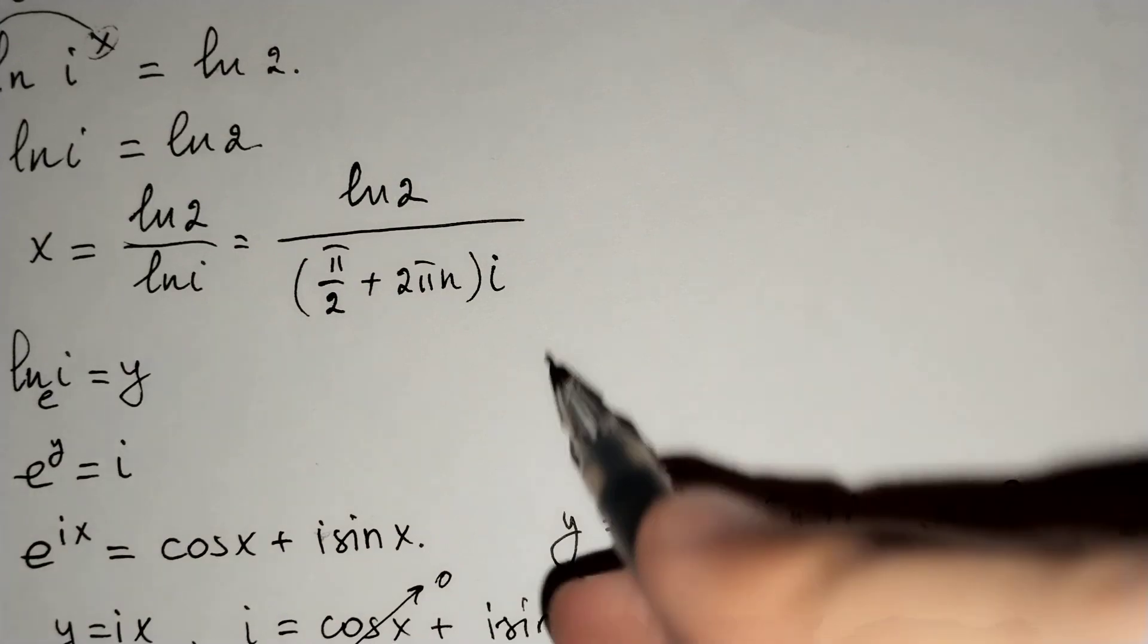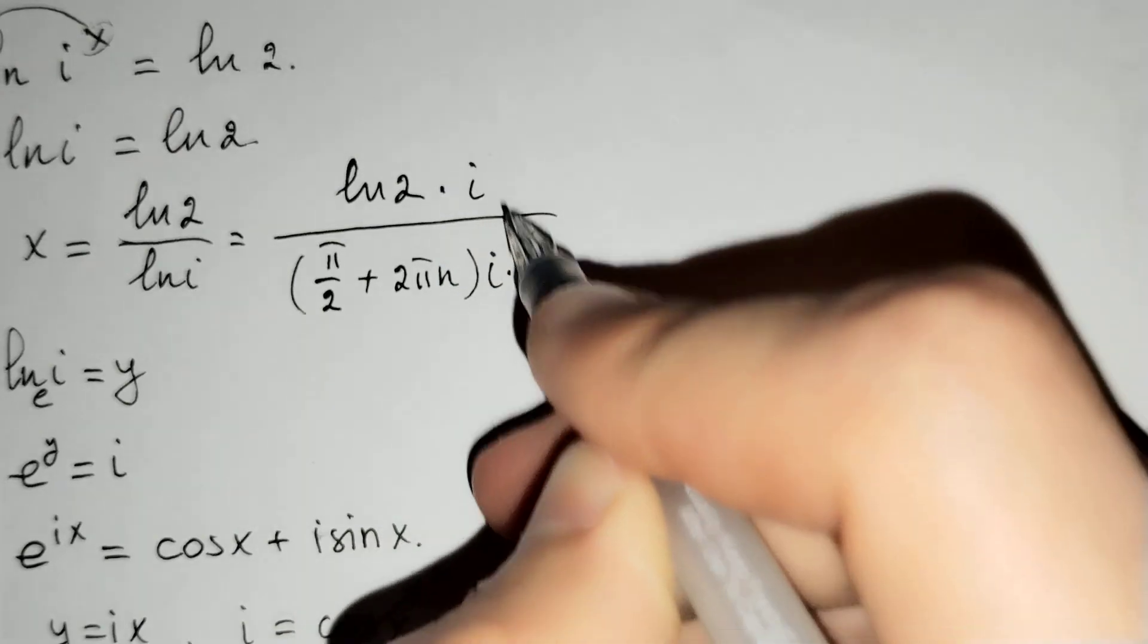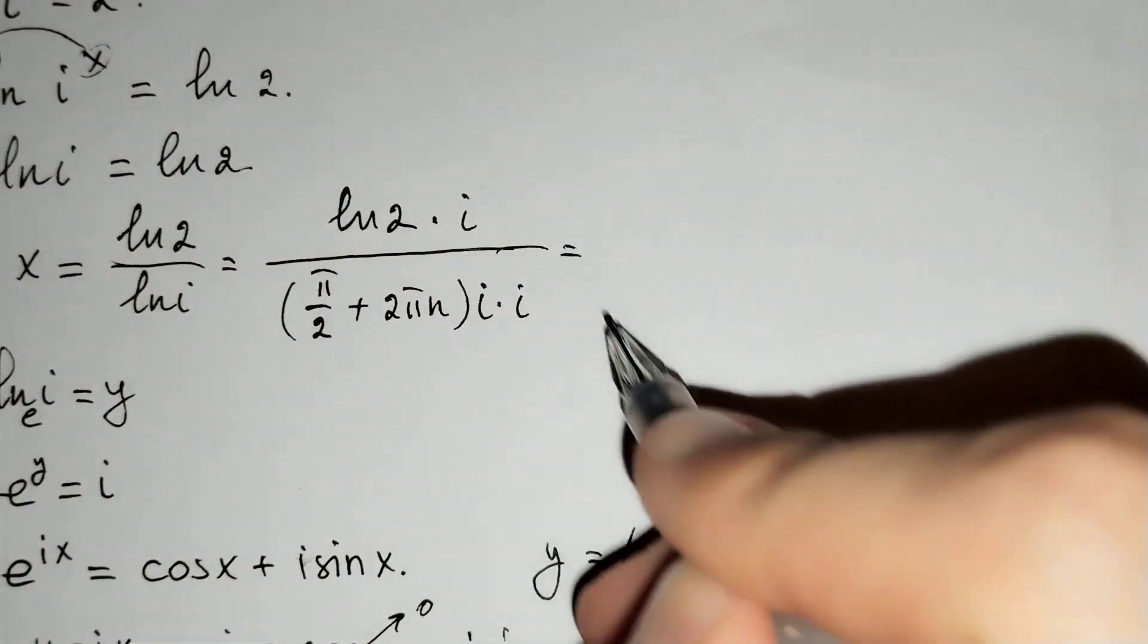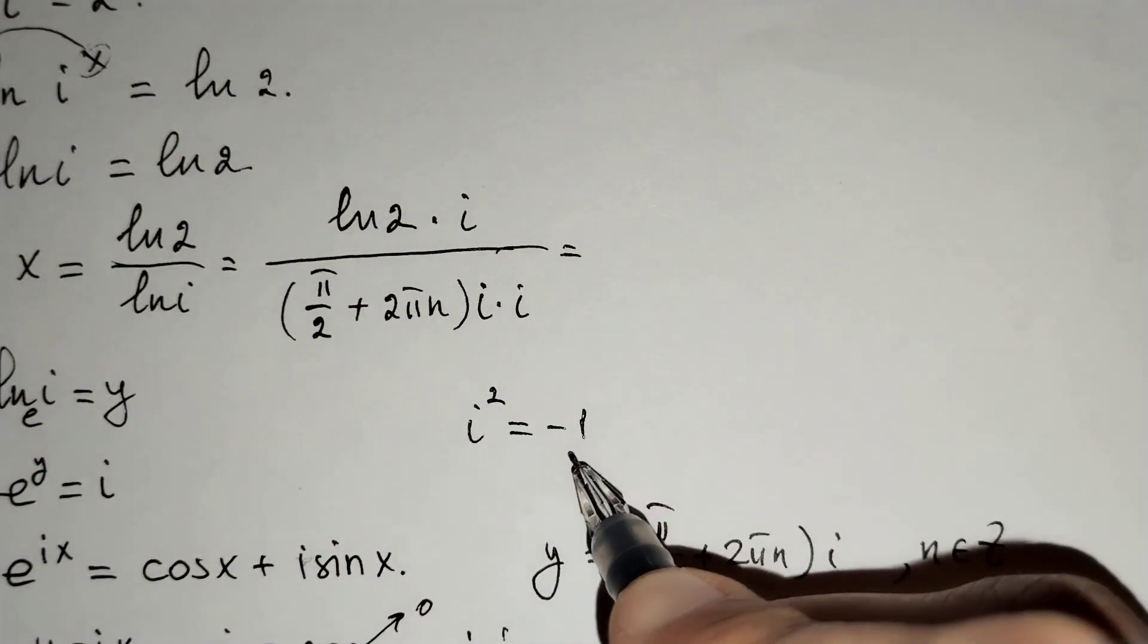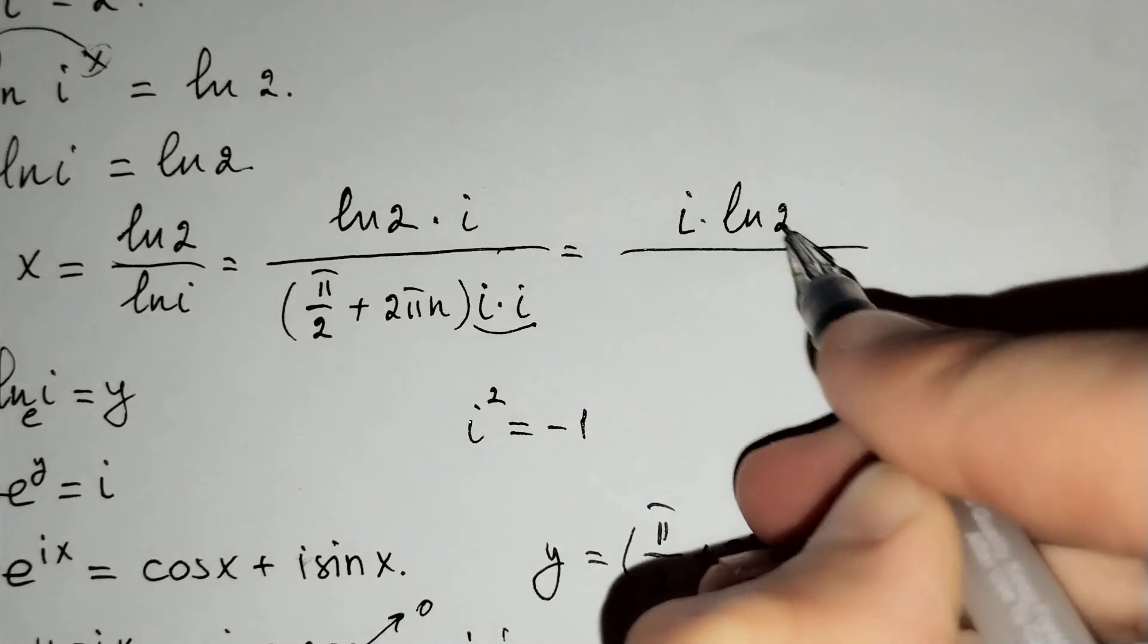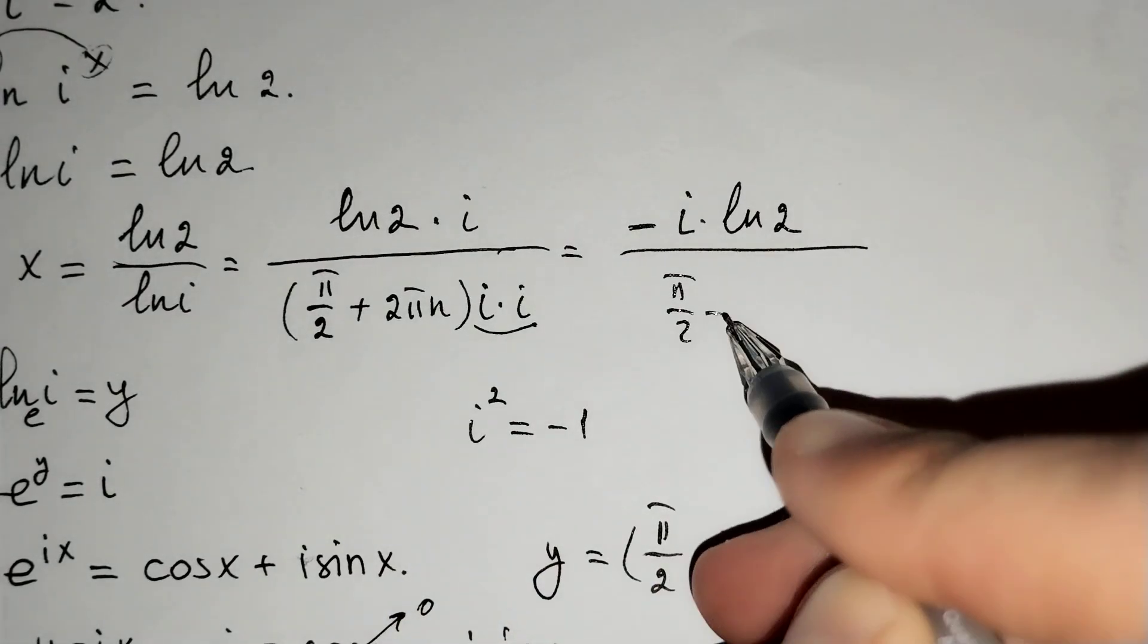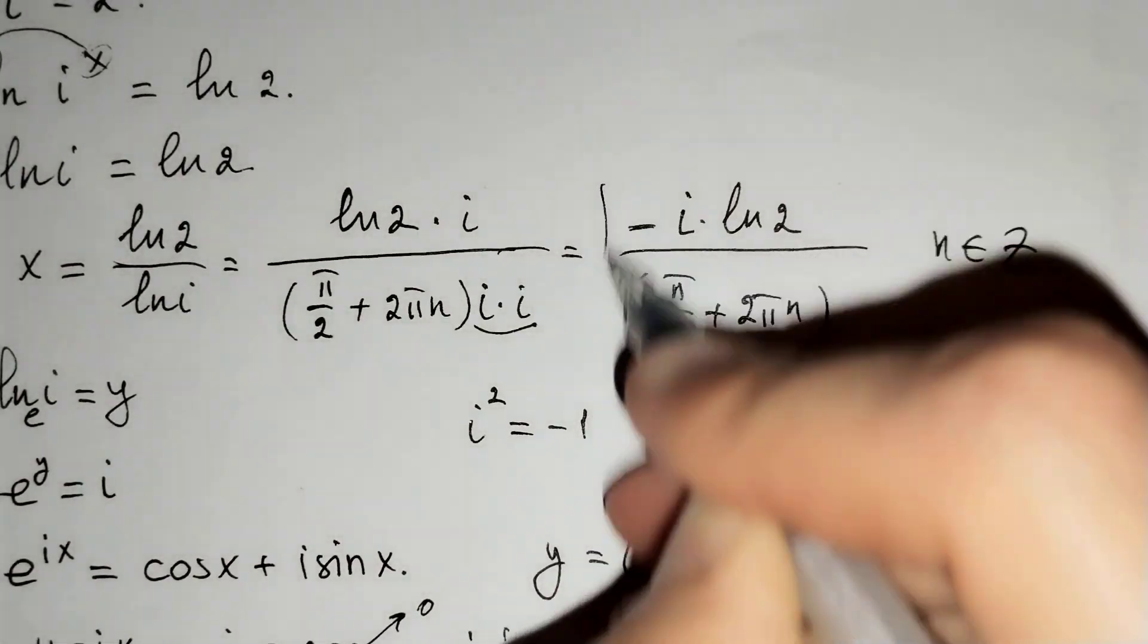And if we multiply both sides of our fraction with i, we know from complex numbers that i squared equals minus 1, giving us i times ln 2 over negative pi over 2 plus 2 pi n where n belongs to integers.